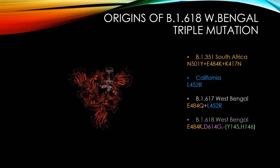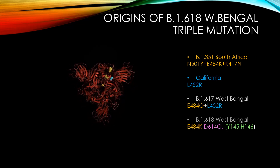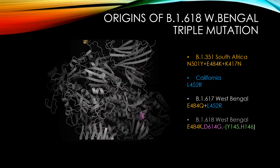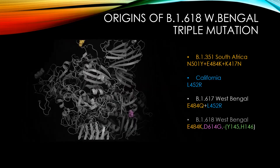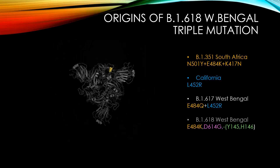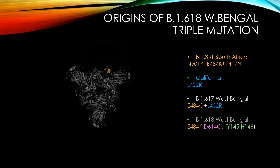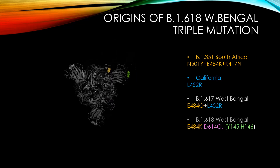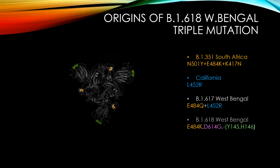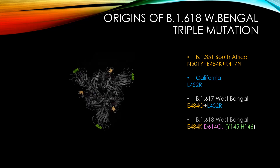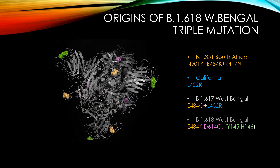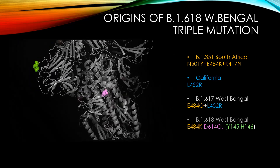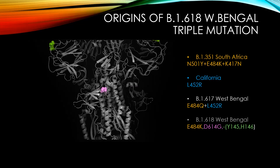The South African and UK variant has mutations shown in yellow, and the California variant has mutations in cyan. If the two combine at E484Q plus L452R, it becomes B.1.617. And if the combination of E484K plus D614G in pink, and deletion at the two green locations, it will become the triple mutation West Bengal variant.